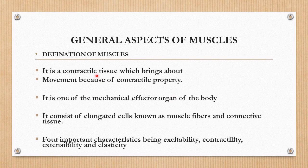As you know very well by definition, muscles are the contractile tissue, and because of this contractile property they bring about movements at various joints. It is one of the mechanical effector organs and it responds to the stimuli and commands from the higher centers. Histologically it consists of elongated cells and connective tissue components. These elongated cells are known as muscle fibers.